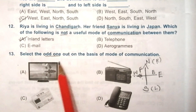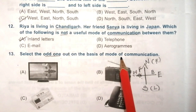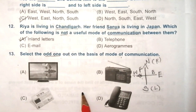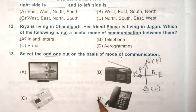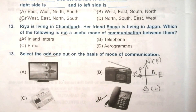Question 13: select the odd one out on the basis of mode of communication. Look at the given options carefully. The answer is D — telephone. Television, radio, and newspapers are mass communication, whereas telephone is a two-way communication.